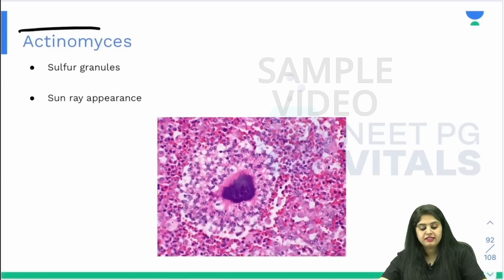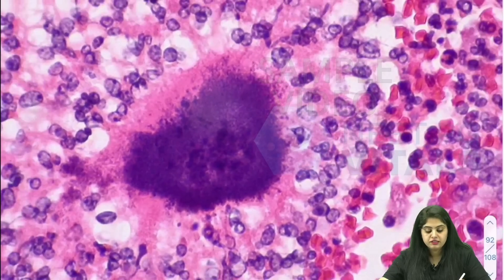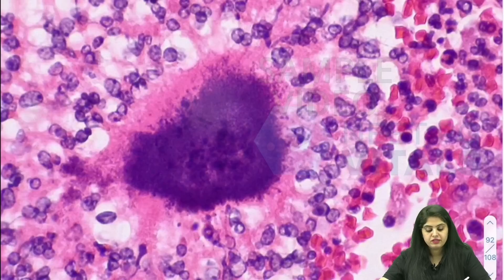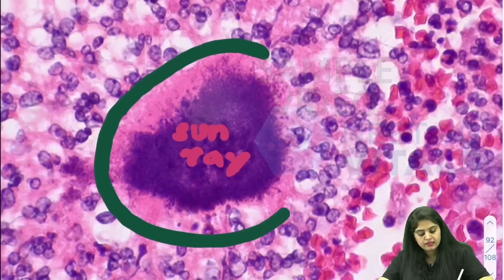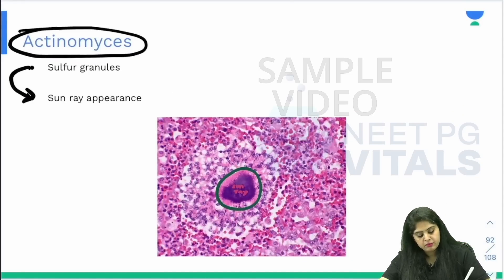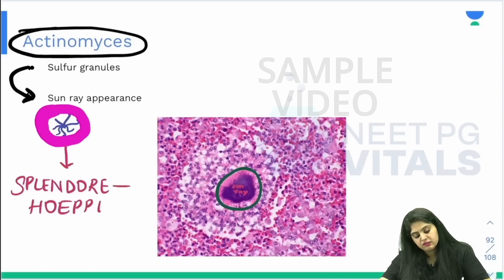Now for Actinomyces: remember the sulfur granules that come out — how do those sulfur granules look under the microscope? Filamentous. So it is going to show a sunray appearance. If you zoom into this, you can see the classical purple filaments coming out — these are the sunray filaments. Now if you notice carefully, around that sunray there is a pinkish layer surrounding it. There is a pinkish hue that comes around it.